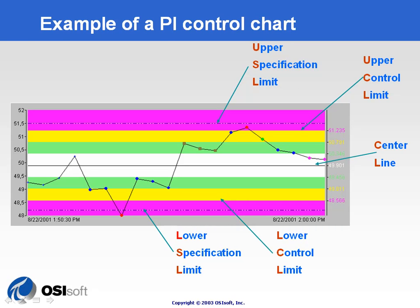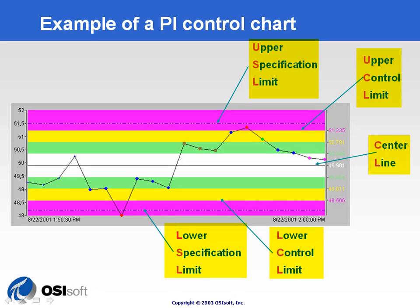Here is an example of a PI control chart where you can see the center line, the upper control limit (3-sigma control limit), and the lower control limit, with dotted lines showing the upper specification limit and the lower specification limit used to calculate the CP and CPK.